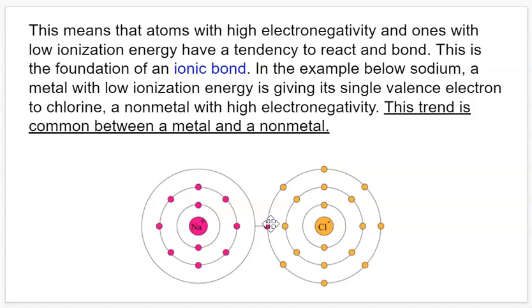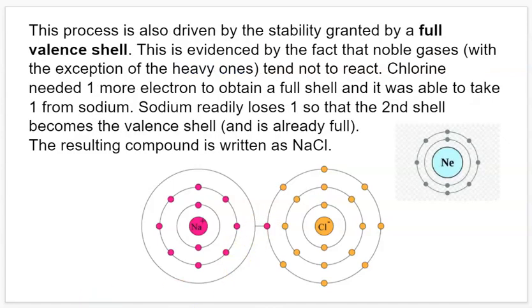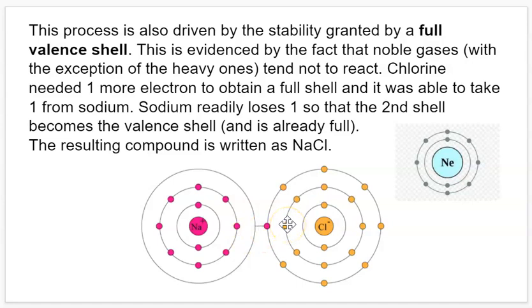This is also driven by the fact that atoms become more stable once they have full valence shells. Sodium only has one valence electron, and to get a full valence shell in the third period it would need eight, so it would have to gain seven — which is unlikely. It's more likely for sodium to lose one electron so the shell below becomes full with eight. Chlorine, with seven valence electrons, only needs one more to get a full shell, so it's highly likely to pull an electron toward it.